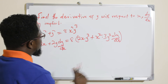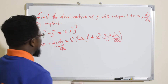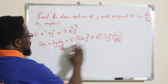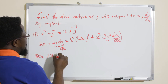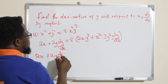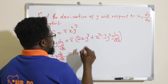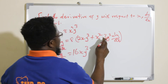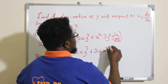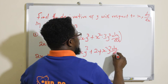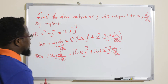We have applied the product rule. Now we collect like terms, grouping all dy/dx terms together. This gives us: 2x + 2y · dy/dx = 16xy³ + 24x²y² · dy/dx. We can see dy/dx appears on both sides, so we need to collect like terms.